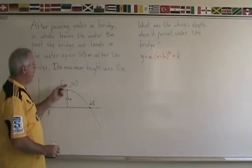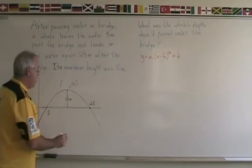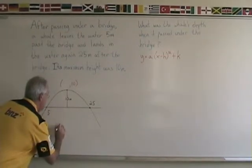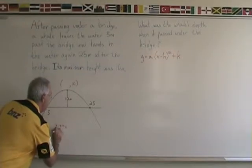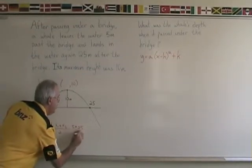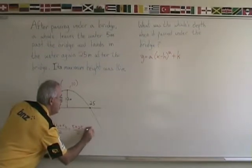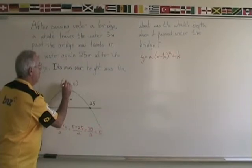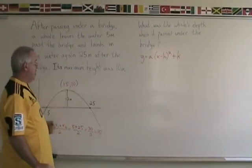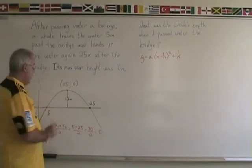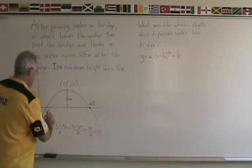We find the x-coordinate of the vertex in the same way, using our zeros 5 and 25. x1 plus x2 over 2 equals 5 plus 25 over 2, which is 30 over 2, which is 15. We have our h, the x-coordinate of our vertex. For the other point, we can use either of the zeros. I'm going to use the first zero, which has coordinates (5, 0).